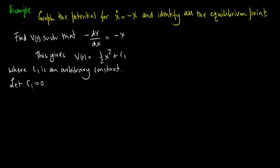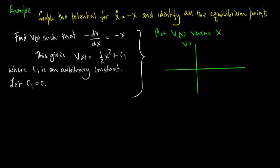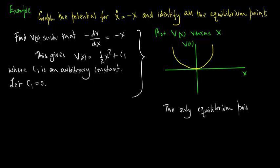We let c1 equal 0 and plot V of x versus x. This plot is a simple parabolic curve. The only equilibrium point occurs at x equals 0 and it is stable.